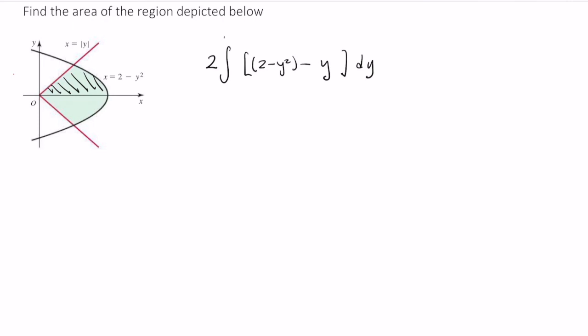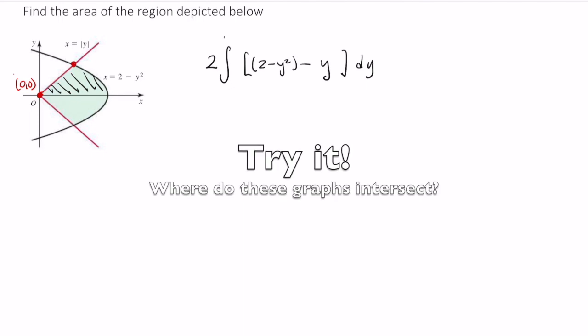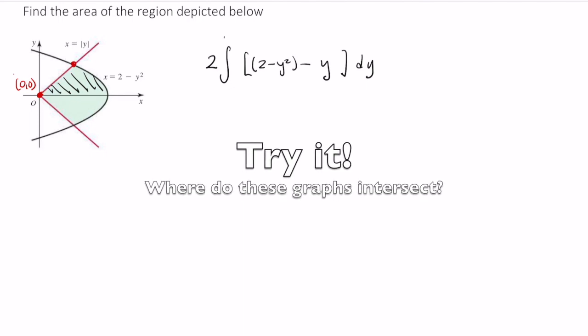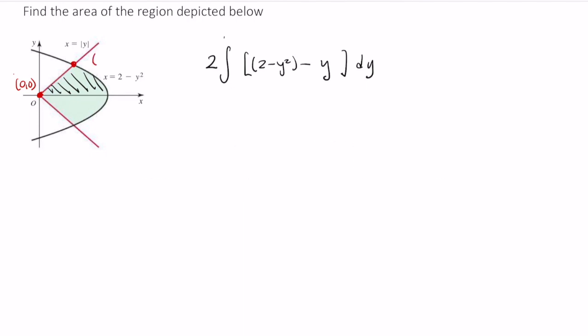Great. Now let's think of our limits of integration. I have one intersection here at (0,0) and another intersection at—take a moment, figure this out either algebraically or using technology. Okay, now that you've tried this on your own, you should see that you have an intersection of (1,1).